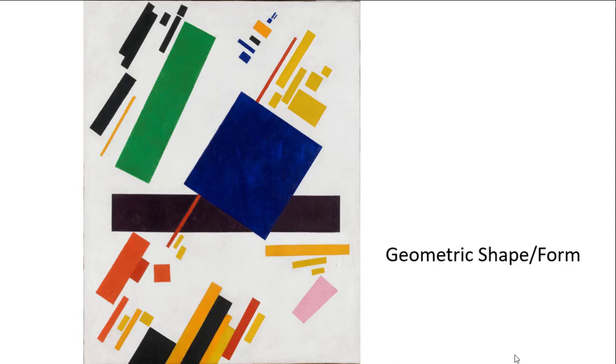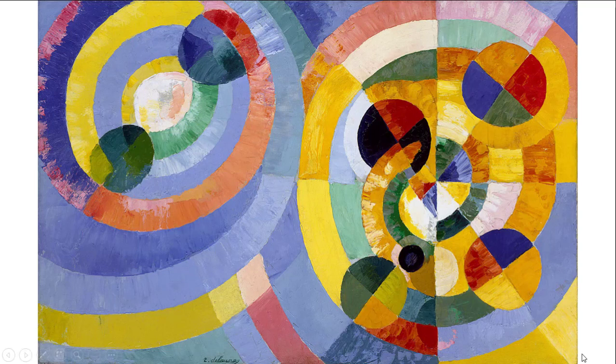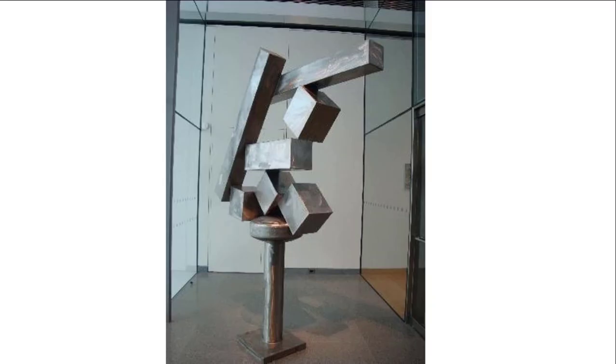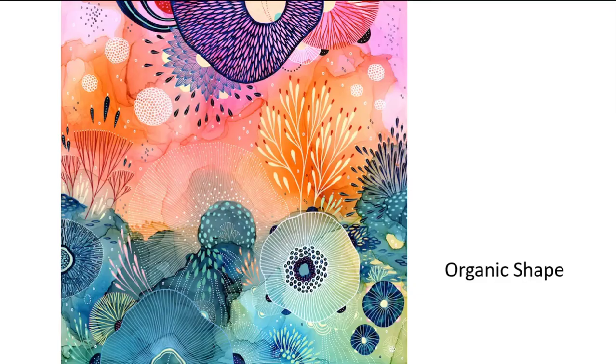This would be considered geometric. If you look at it, the shapes are more organized and structural. We can also have three-dimensional. This is a David Smith sculpture that he did, and so it would definitely be geometric. It could also happen in sculpture. The second of the types is organic.